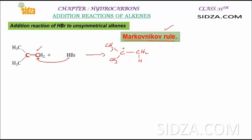When hydrogen goes to the carbon with more hydrogen atoms, you get a tertiary carbocation intermediate. Then in the second step, Br- will attack on the same carbocation. You get the product with a carbon-carbon single bond, Br on the tertiary carbon, two methyl groups, and the CH2 becomes CH3. This is the product as per Markovnikov's rule.